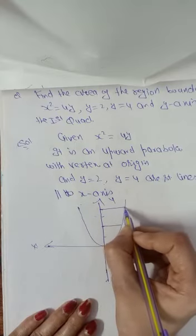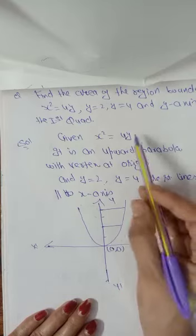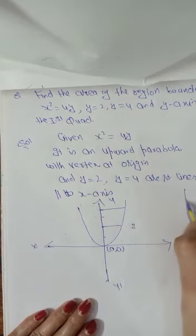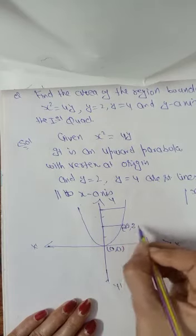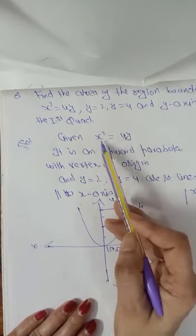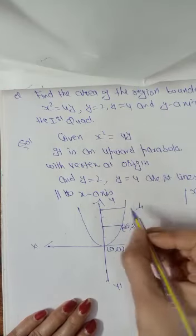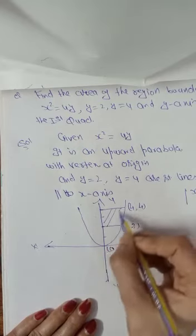At this point, coordinate of y is 2. When y equals to 2, we have x square equals to 8, or x will be 2 root 2. And at this point, y coordinate is 4, x square will be 16, so this point will be 4,4. We have to calculate this area.